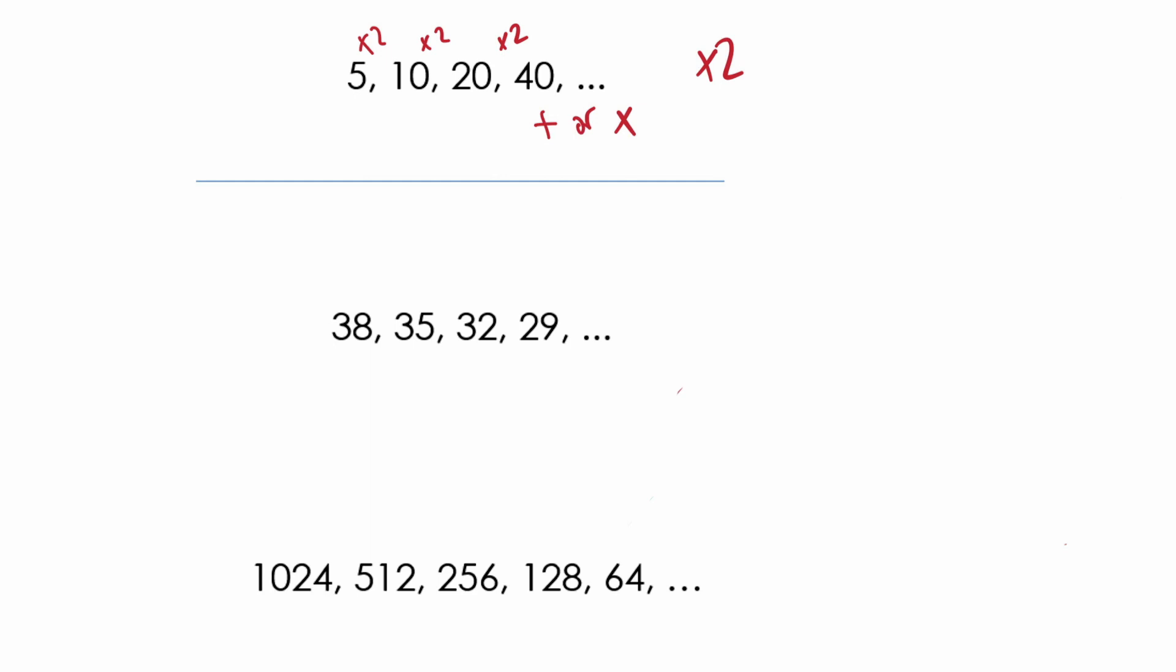This one here is going down, so that means it's either subtraction or division. And it is going down by three each time. So it's subtracting three. And this one here is also decreasing. So it's either subtraction or division. And it is decreasing by a lot. So it gives us an idea that it's division, and each number is being divided by two. So divide by two.